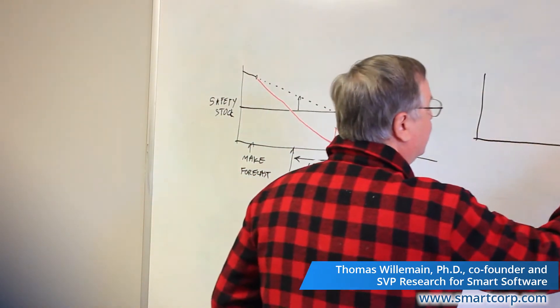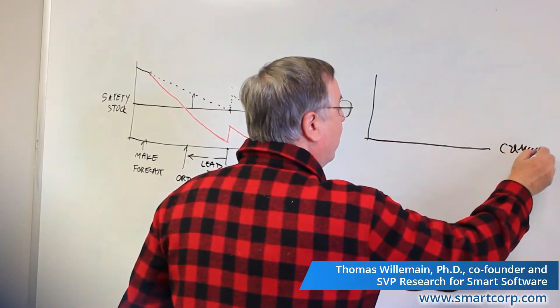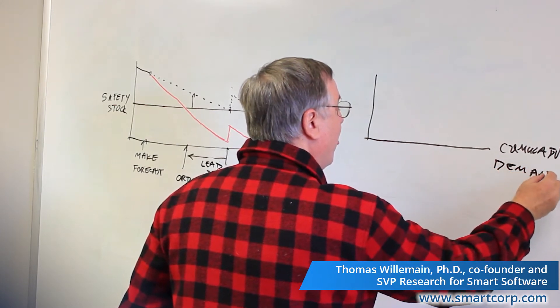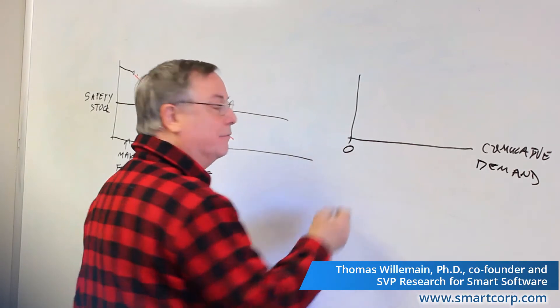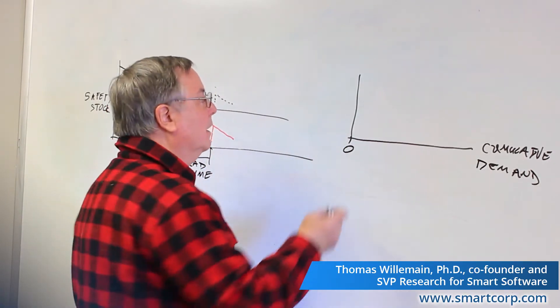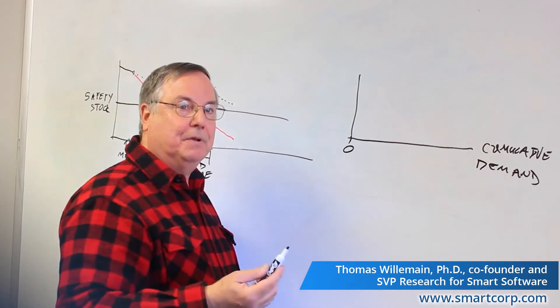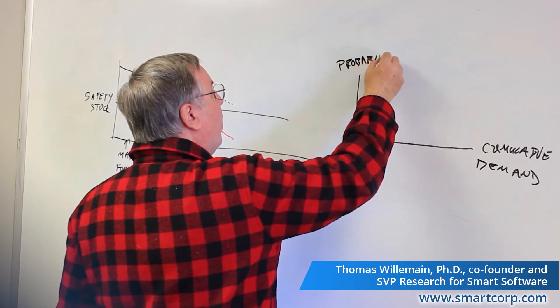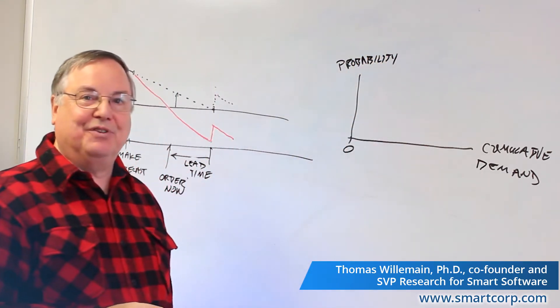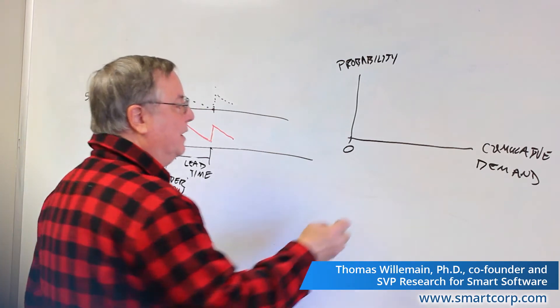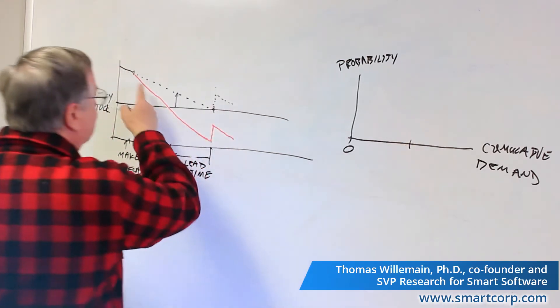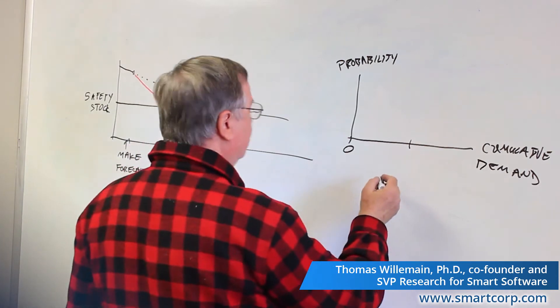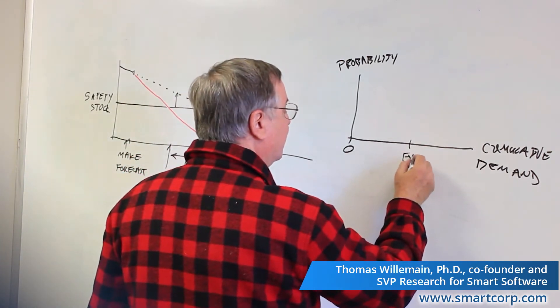So now we have a different kind of plot. We have cumulative demand, and we realize that could be anything from zero to some big number. And what we're going to show is all the possibilities, and we'll express this in terms of probabilities. Now probability theory comes into the demand planning process, and we have an expected forecast that's this dotted line. And it says we think that there'll be a certain total demand over the lead time, so this is the expected forecast.